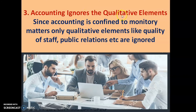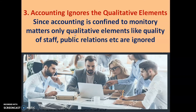The next limitation is accounting ignores the qualitative elements. Since accounting is confined to monetary matters only, qualitative elements like quality of staff, public relations, etc., are ignored. In accounting, we record only those transactions which are in terms of money — which have value and can be counted in money. We do not record the qualitative aspects, such as quality of staff, which may sometimes directly or indirectly relate to the performance of the business. Thus, ignoring qualitative elements is a drawback of accounting.